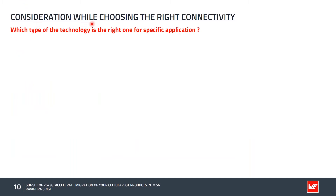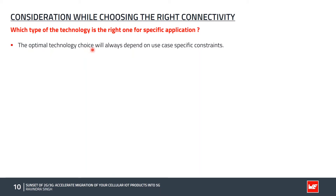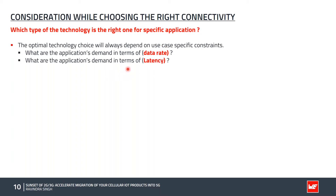Now let's look at considerations when choosing the right connectivity. The optimal technology choice always depends on use-case-specific constraints. Key questions to help determine the right technology: What are the application's data rate requirements — higher or lower? What are the latency requirements — can the application accept higher latency or does it need lower latency? Where will it be deployed — does that country or region have coverage for the technology you are considering? What are the roaming requirements across networks?